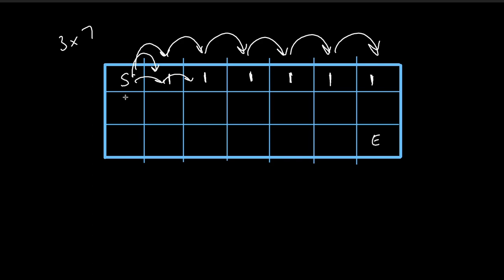If you want to go to the position just downward of the starting position, there is one possible way — simply move down. So one way to reach there, and similarly one way for the next cell down. Now for the cell at row two column two, we have two options: we can come from above or from the left. Left has one path, top has one path, so one plus one gives us two possible ways.